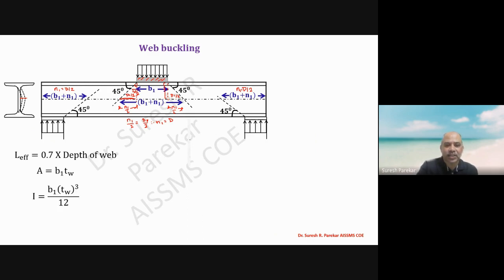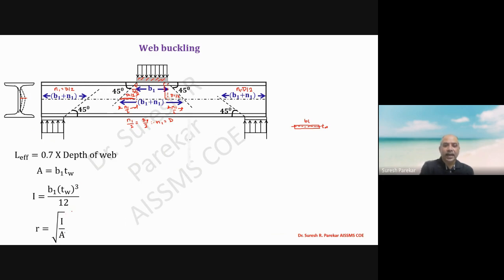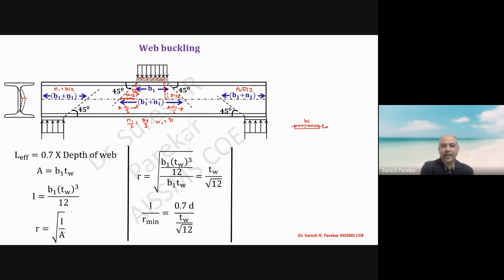The moment of inertia is I = b1 × tw³ / 12. The radius of gyration r = √(I/A) = tw / √12. Then the slenderness ratio λ = L_eff / r = 0.7d / (tw / √12). The design compressive strength fcd is found from curve C. The buckling resistance is (b1 + n1) × tw × fcd, where (b1 + n1) × tw is the bearing area multiplied by fcd.